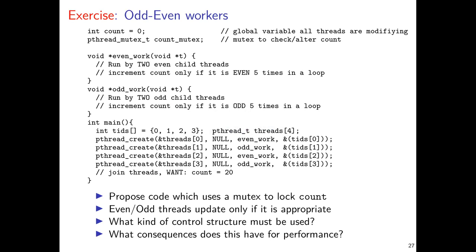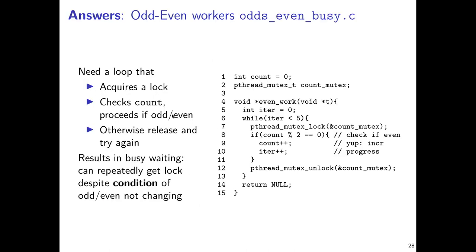We left off last time with the odd-even workers problem. The basic premise is two types of threads: one running an even work function and one running an odd work function. This is a toy problem to demonstrate and motivate a new coordination mechanism. The even workers increment a global variable when it's even, and the odd workers increment it when it is odd.